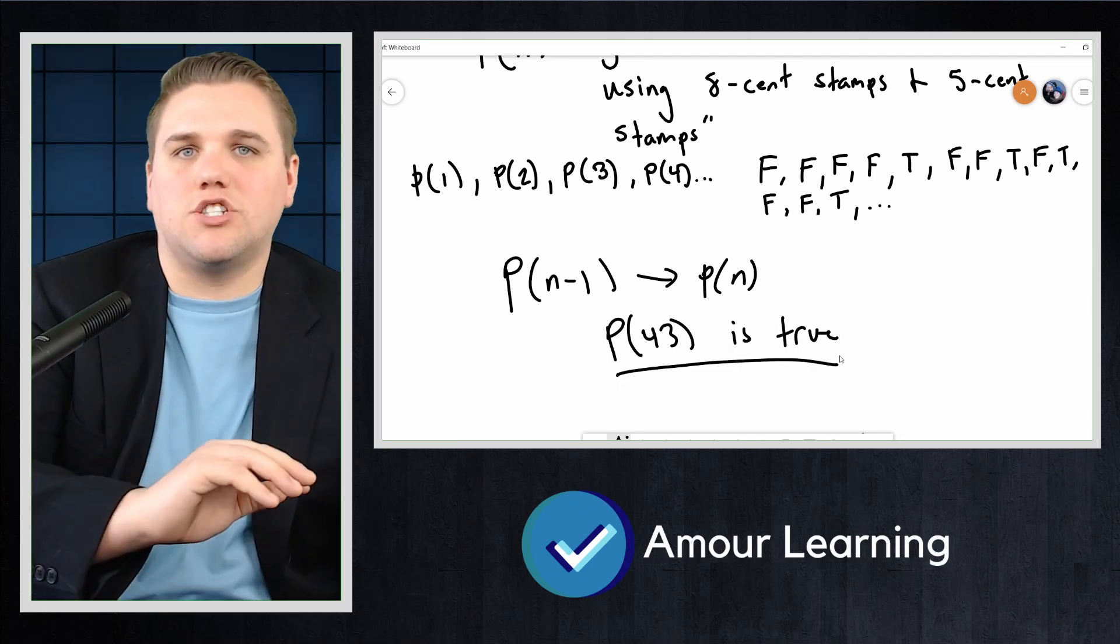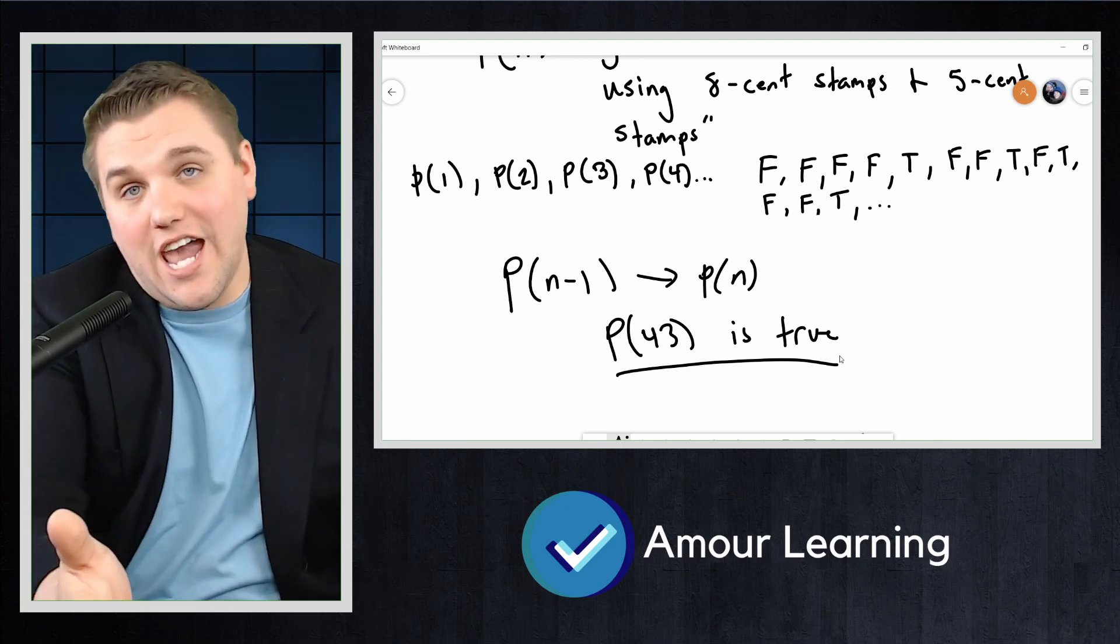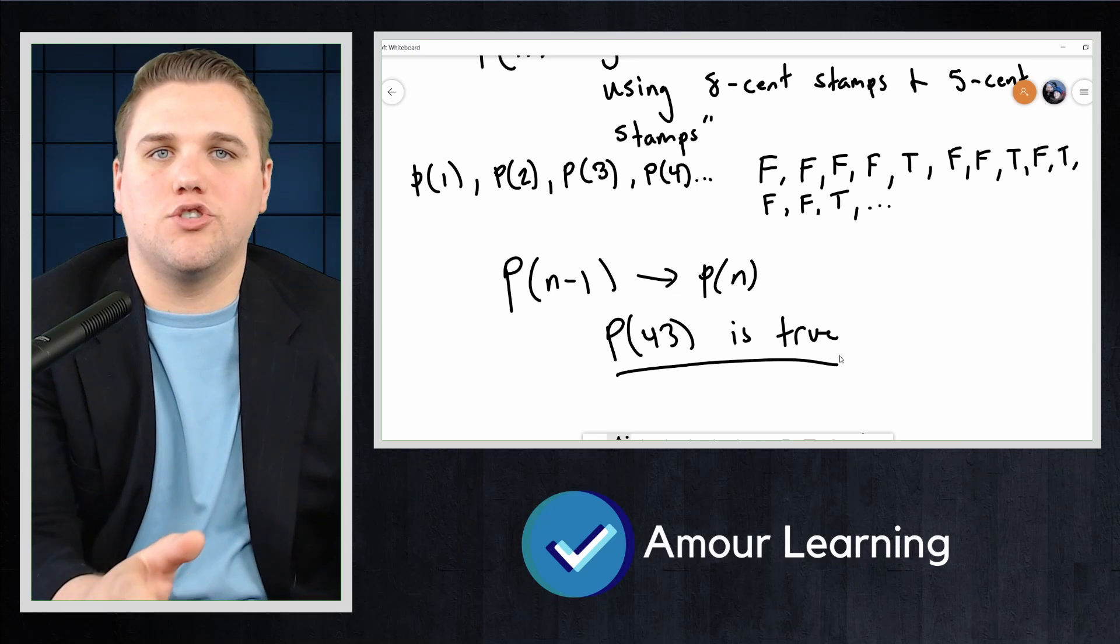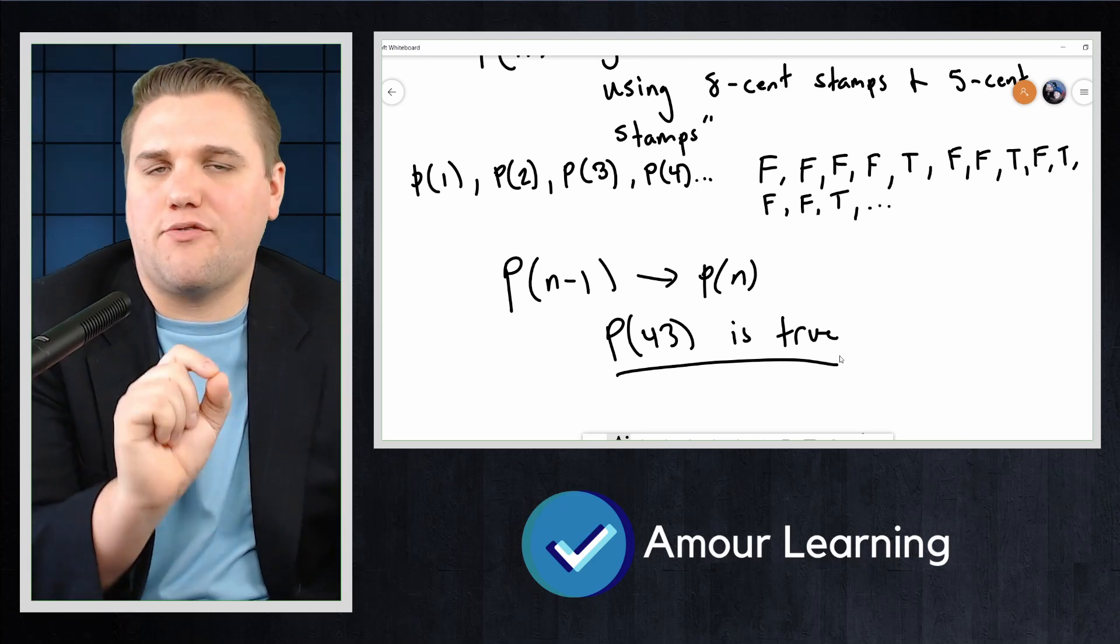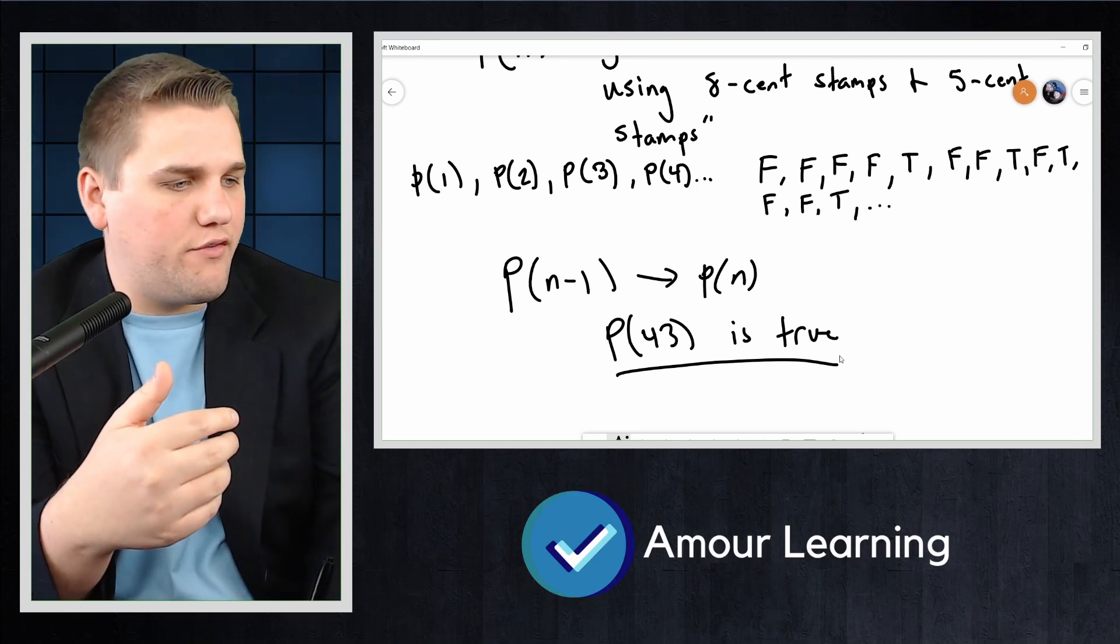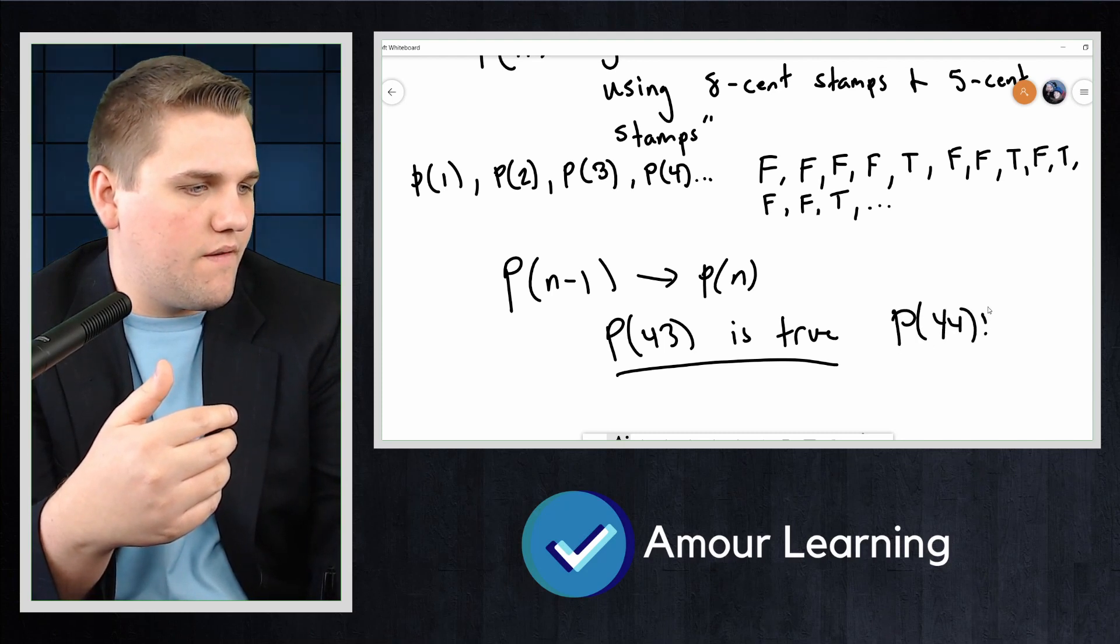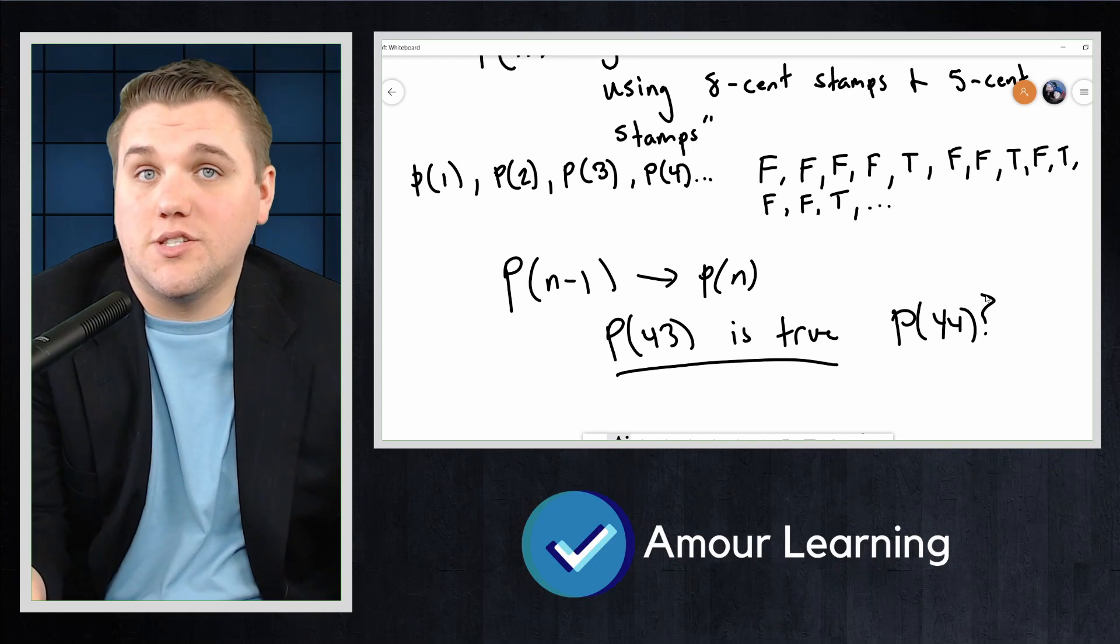The same is true here. Suppose I told you that P(43) was true. Now, why is it true? Just assume that it's because I told you. It is true, but just assume that I told you that P(43) was true. Can you determine from this fact the value of P(44)? Whether it is true or false?